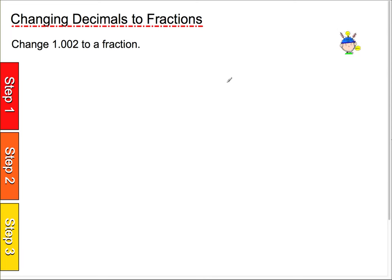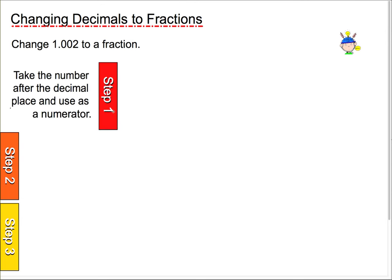Moving right along, changing decimals into fractions. So, we're going to start with 1.002 to a fraction. So, the first step we have right here is to take the number after the decimal place and use it as a numerator.